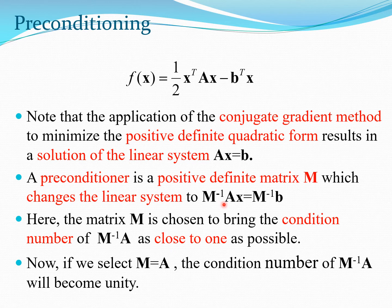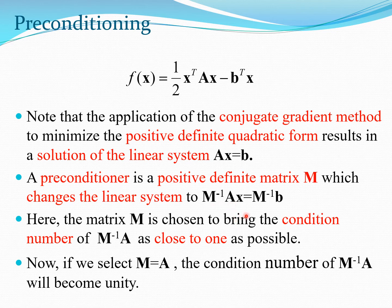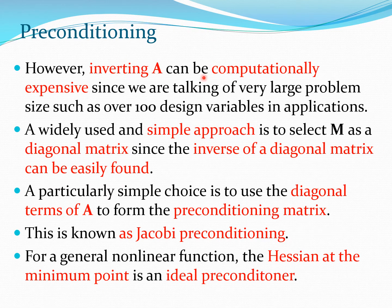If you pick M equal to A, then M⁻¹A becomes the identity matrix, meaning you can immediately solve the system — the condition number becomes unity. This is actually a perfect preconditioner. However, inverting matrix A is computationally expensive, especially for large problem sizes involving 100 or more design variables as used in conjugate gradient methods. Therefore, inverting A is not practical.